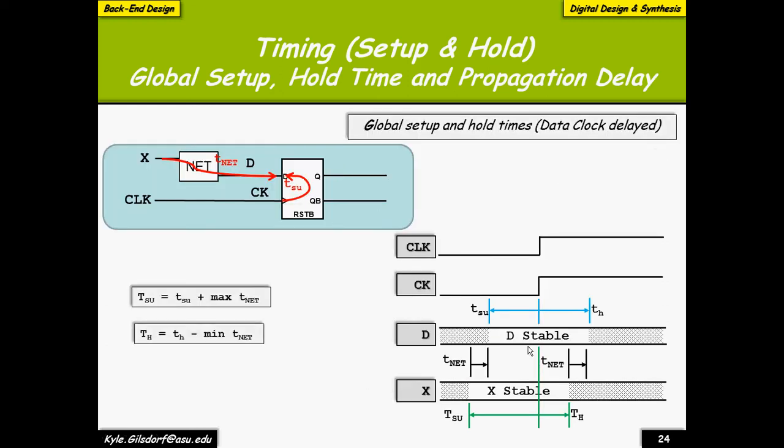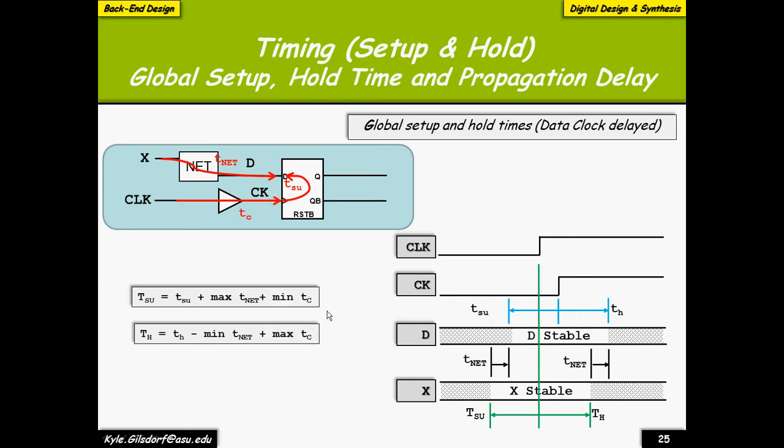So, what we want to do here is we want to start adding all of these features together. So, again, with basically a net delay, our waveform looks like so. So, with some input data delay, we have the following equations, which we talked about before. Our setup plus our maximum net delay. Our hold minus our fastest net delay. Net being our logic or some routing delay. Now, let's add in the clock delay.